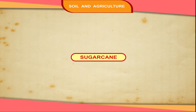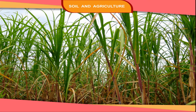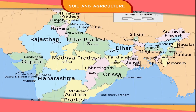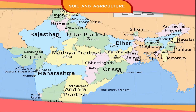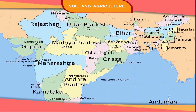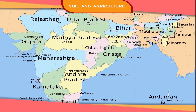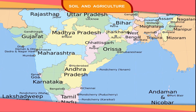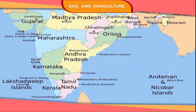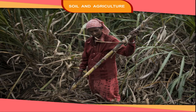Sugarcane is used to make jaggery and sugar. Its producer states are Uttar Pradesh, Bihar, Punjab, Haryana, Karnataka, Maharashtra and Tamil Nadu. India is the leading producer of sugarcane in the world.